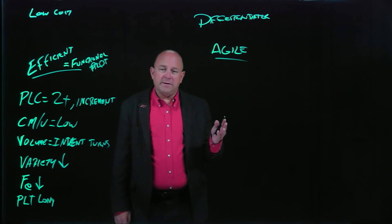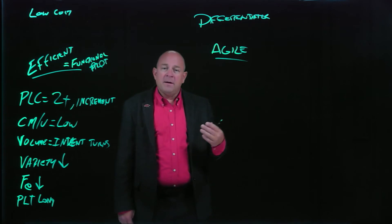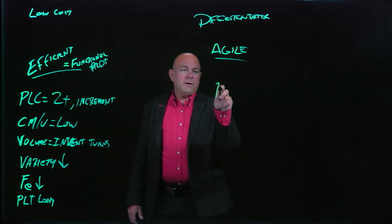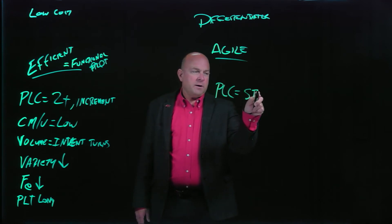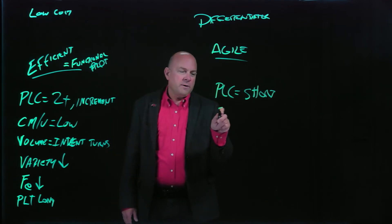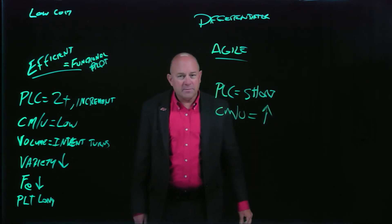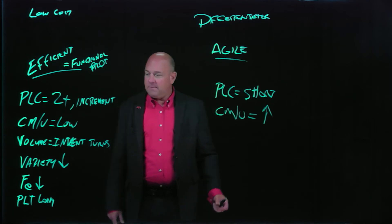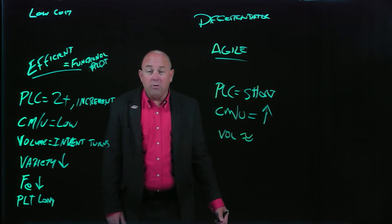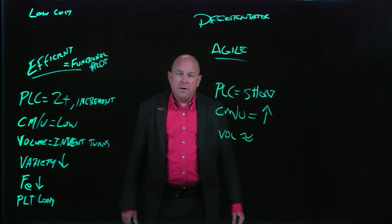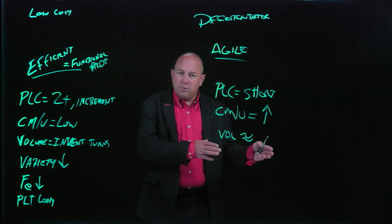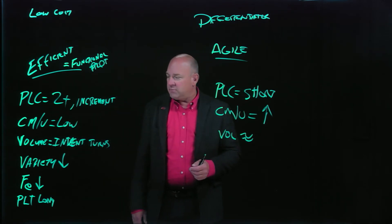Another strategy more oriented towards firms interested in differentiation is what we call agile. Agile is the opposite of efficient. When we think about product life cycle, we think about very short product life cycles — maybe six months. Think about an Apple iPhone. However, my contribution margin per unit tends to be very high; I make a lot of money on each unit I sell. Because of that, while I'd love high volumes, I don't always have them — sometimes we'll have low or medium volume sales. Metrics like inventory turns might be much less important here than to an efficient organization.